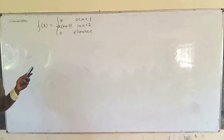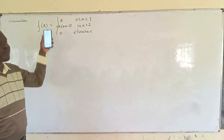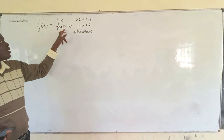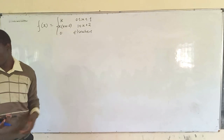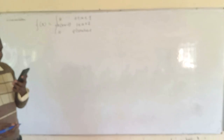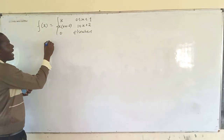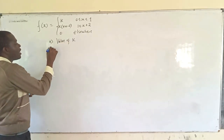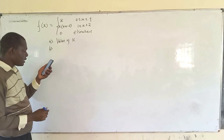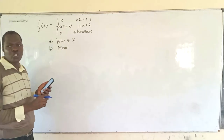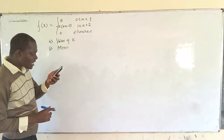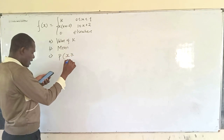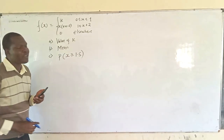A continuous random variable has probability density function f(x) = k when x is from 0 to 1, and f(x) = k(x minus 2) when x is from 1 to 2, and 0 elsewhere. You've been told to determine: (a) the value of the constant k, (b) the mean, and (c) the probability that x is greater than or equal to 1.5.